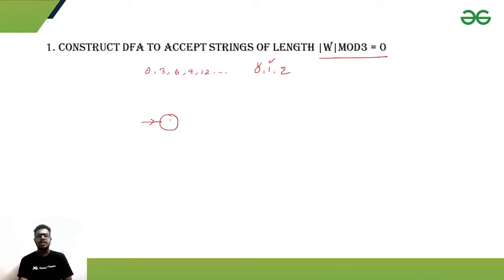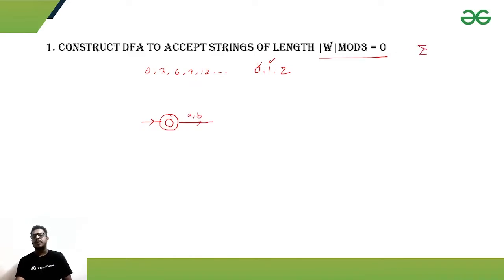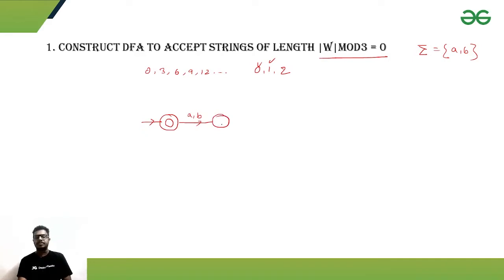Accepting zero length means our initial state will also be the final state. Our alphabet has only two symbols: a and b. If we get any one symbol, we go to a non-accepting state, because a length-1 string should not be accepted. Getting another symbol gives us a length-2 string, which also won't be accepted.